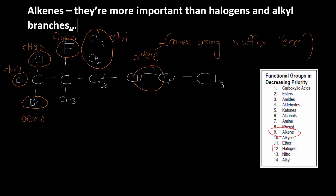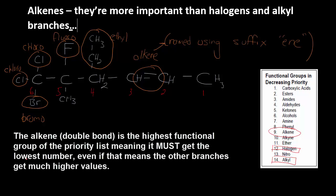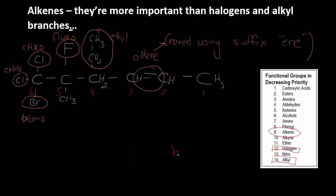You can see that alkene is higher on the priority list — higher meaning decreasing priority, so 9 is more important than 12 or 14 on that list. It means the alkene must get the lowest possible number. So I'm going to start numbering from the right-hand side. That puts the alkene double bond between carbons 2 and 3. This would be hex-2-ene because there are 6 carbons in the main chain and the double bond occurs at carbon 2.